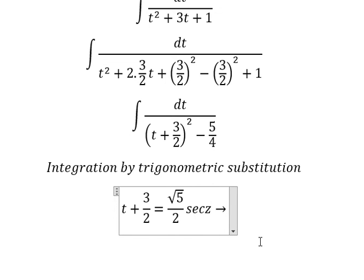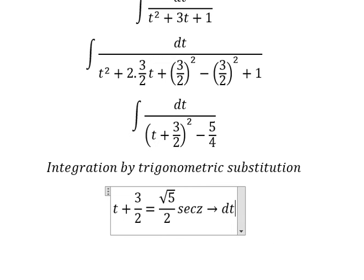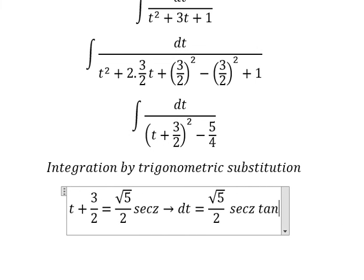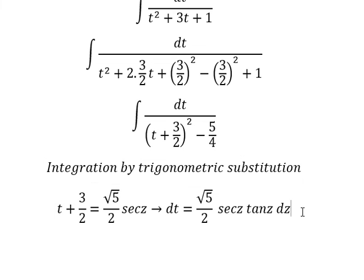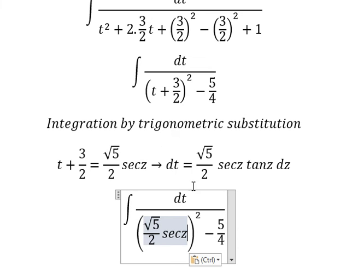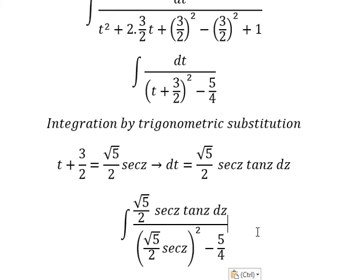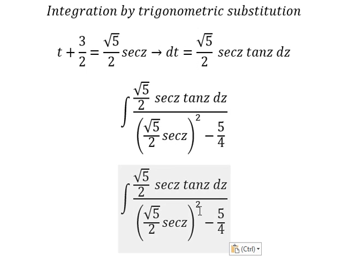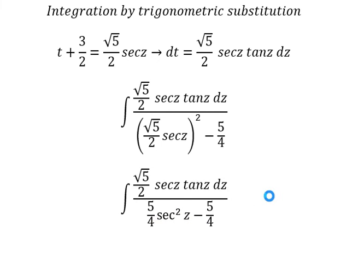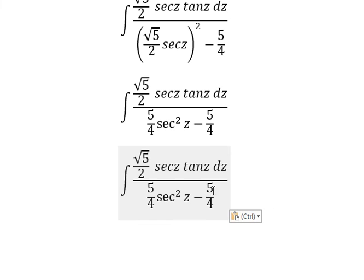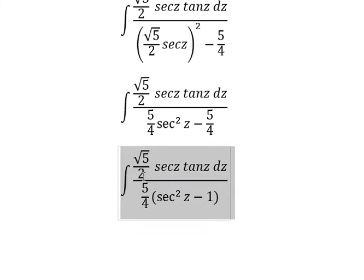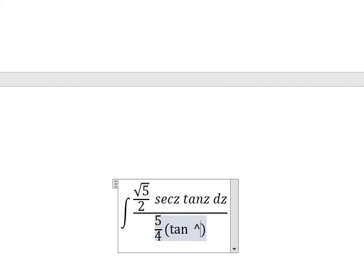We differentiate both sides, giving dt equals the square root of 5 over 2 times sec(z) tan(z) dz. We substitute this in: t we change for this expression, and the denominator we change for 5/4 sec squared(z), and using factorization we change that part for tan squared(z).